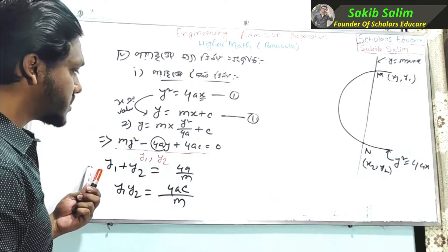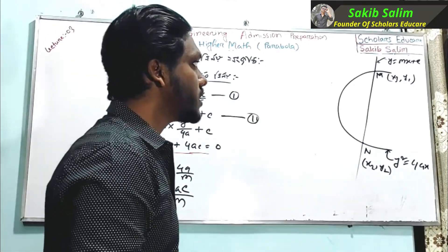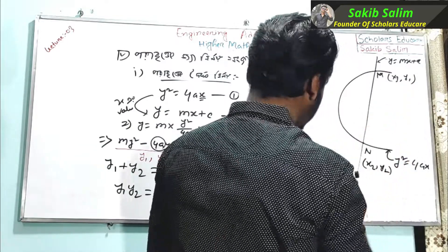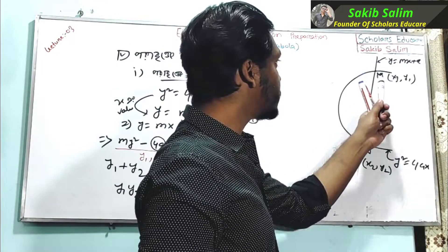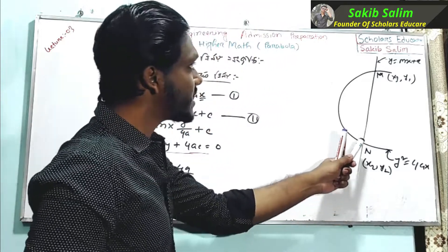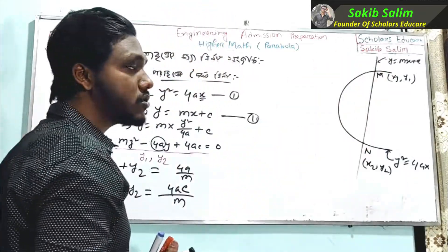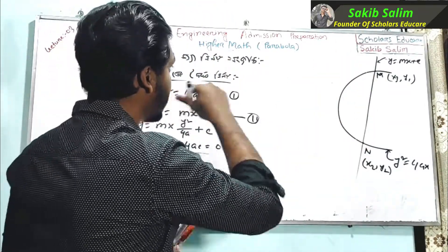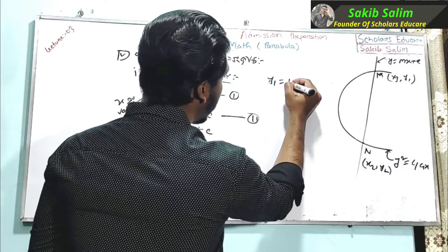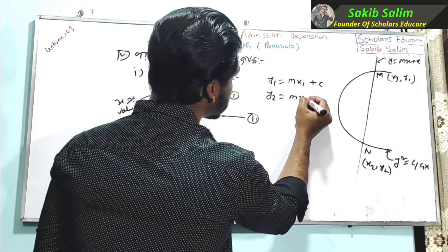Now we can use the concept to follow: y1 plus y2 is equal to c divided by a. We call x in terms of y by x equals y squared divided by 4a. And the line gives y2 equal to mx2 plus c, and y1 equal to mx1 plus c.